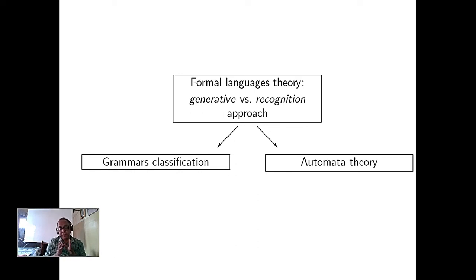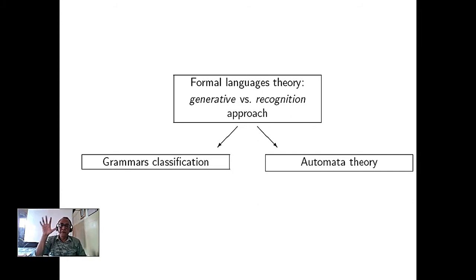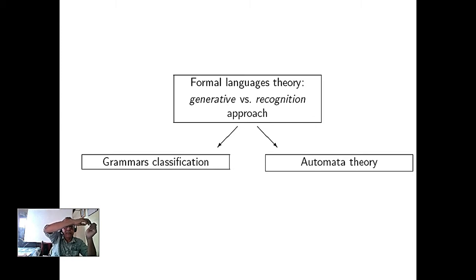Good morning. Today in Lecture 4 we try to get the basics of the finite state machine. This course is on formal language. Formal language is the parent of programming languages — C, Java, Python are extended versions of formal language. A regular language can run on a finite state machine; context-free grammar runs on a finite state machine with a stack, called pushdown automata; and then there is the Turing machine.